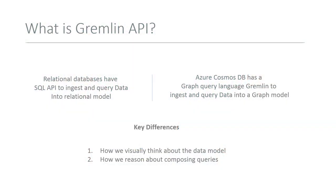Talking about core concepts — what is Gremlin API? To understand that, relational databases have SQL API to ingest and query data. Similarly, Azure Cosmos DB's Gremlin or Graph API has a query language called Gremlin to ingest and query data. Some key differences between these two models are how you visually think about the data model, as well as how you reason about writing queries.